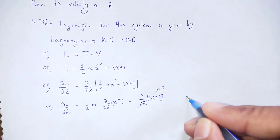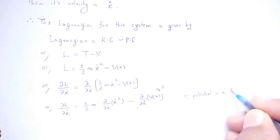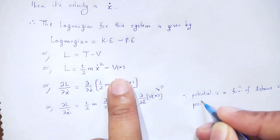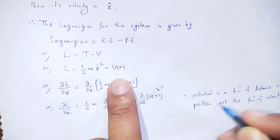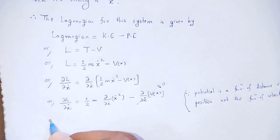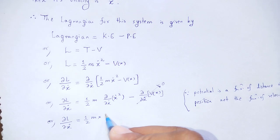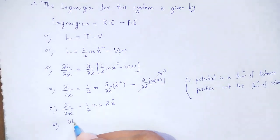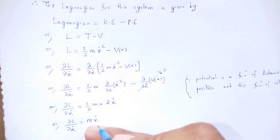Since the potential V(x) is a function of position x and not a function of velocity x-dot, its partial derivative with respect to x-dot is zero. Therefore, the second term vanishes. Then del L / del x-dot = half m times 2 x-dot, where the 2 cancels with the half.